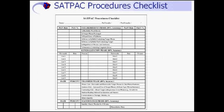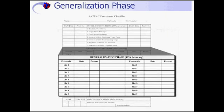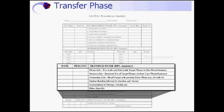This is the SATPAC procedures checklist. The therapist uses this checklist to keep track of a student's progress. The SATPAC program involves three major phases: the establishment phase, where the student develops competence using the seed word in successively more difficult contexts; the generalization phase, where the student learns to say the target sound in various phonetic contexts; and the transfer phase, where the student transfers skills into phrases and sentences using real words until conversational competence is attained. There is also a maintenance phase after the program is completed.